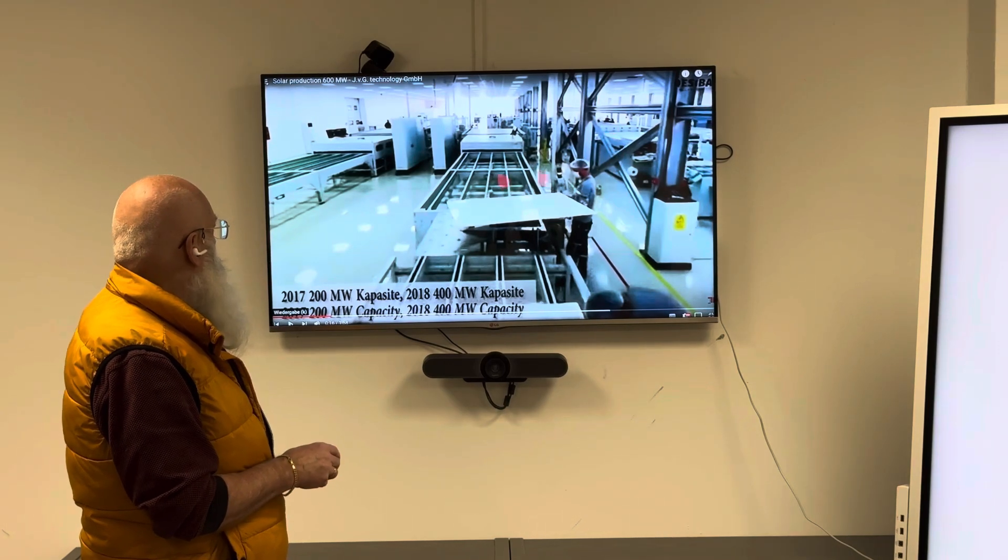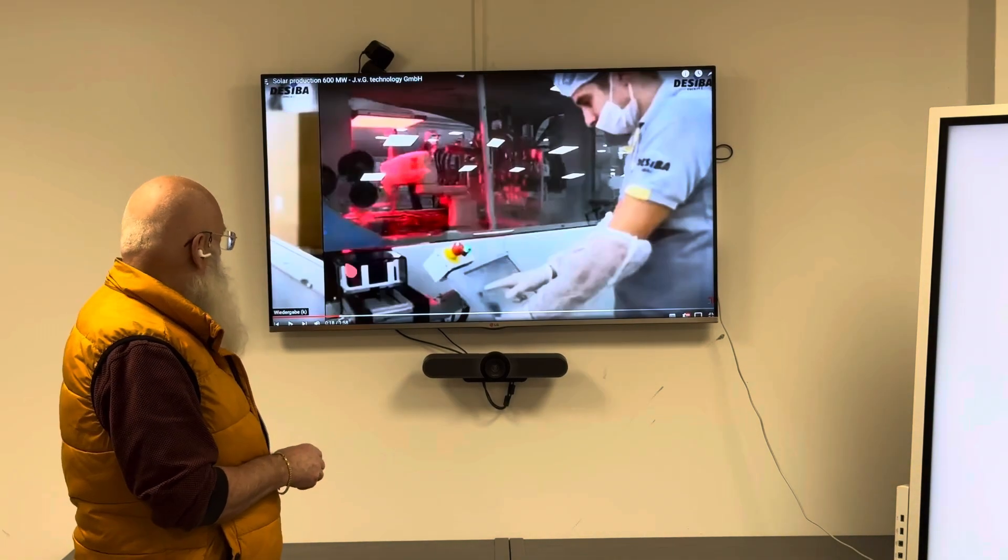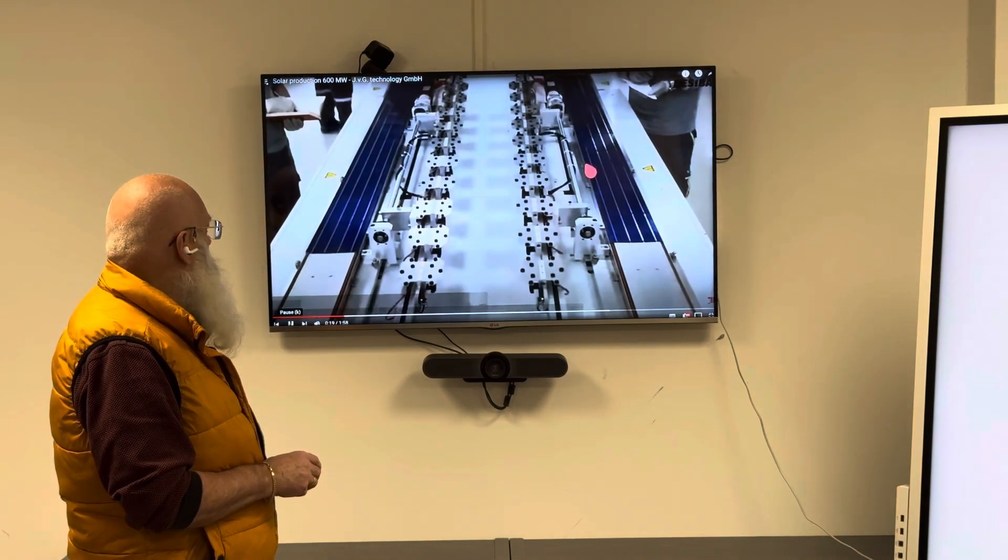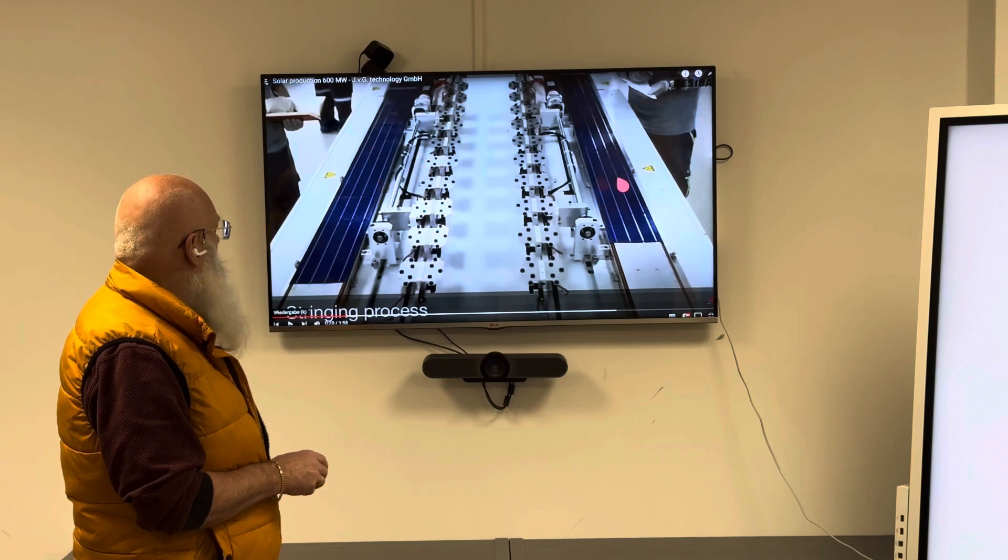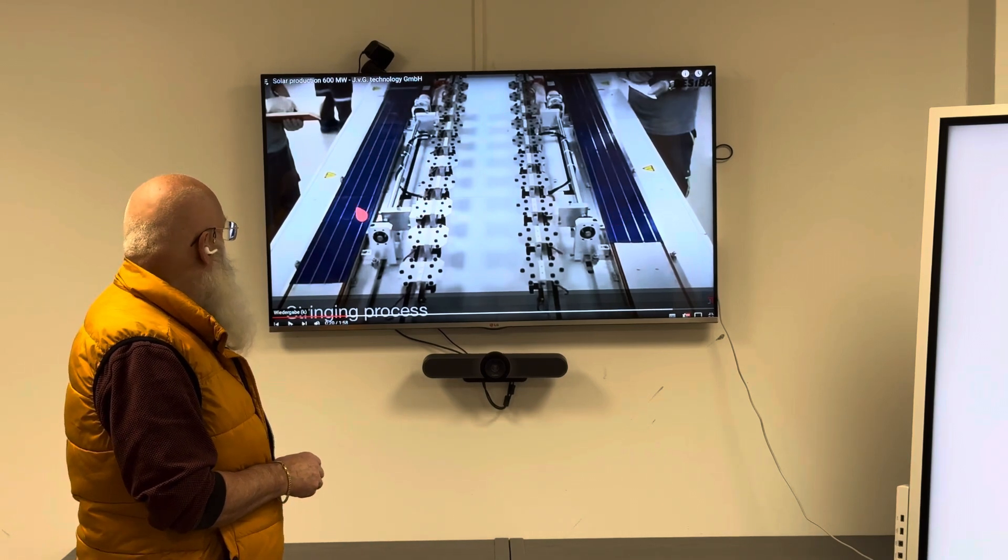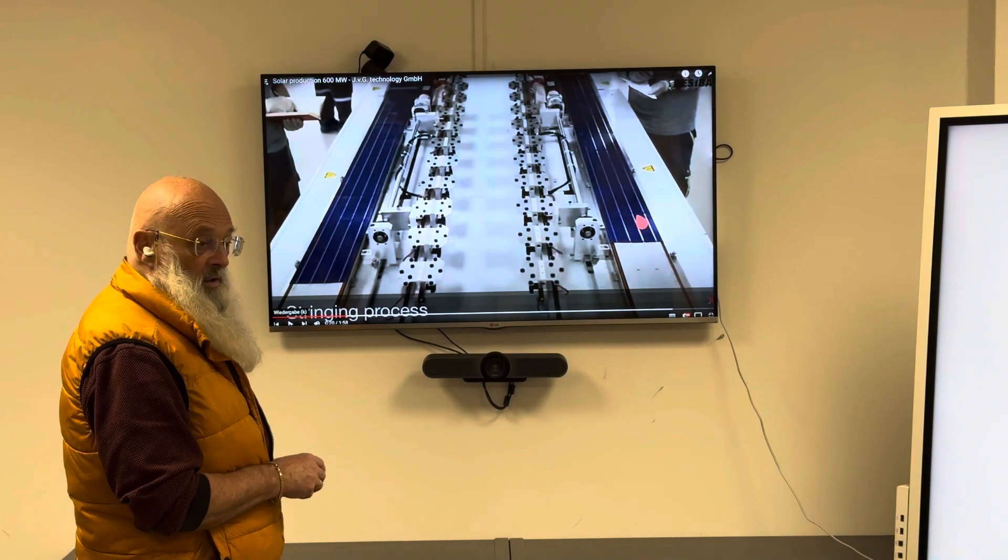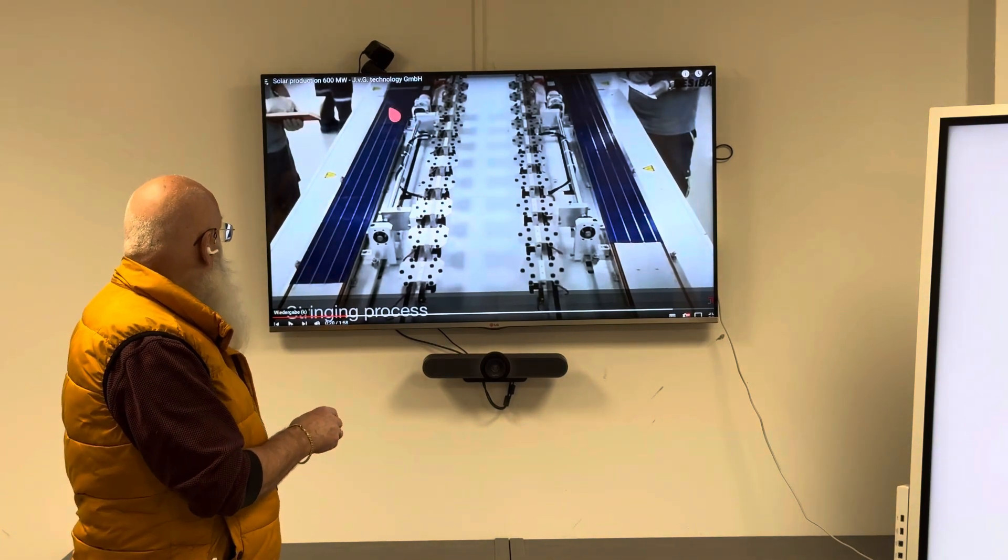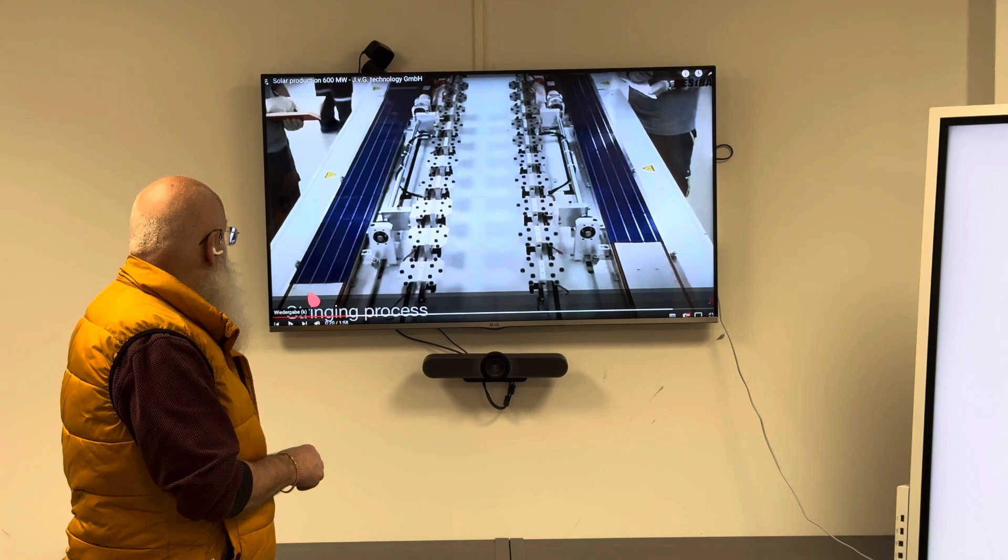We are starting with the first process, which is stringing. You see it's a double stringer. At this time it was four busbar stringing. Now we have 20 busbars or up to 20 busbars. This we call a complete string which is used for the layup system to make a complete solar module.